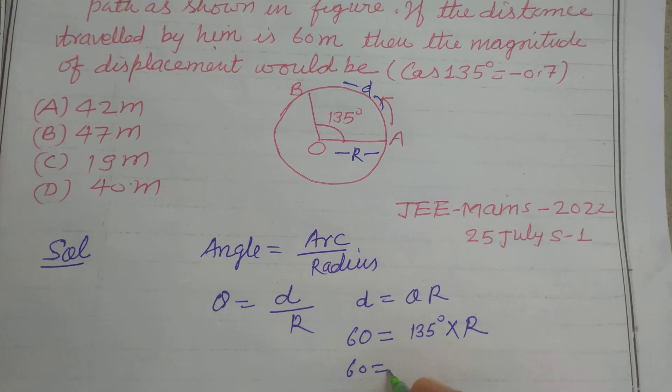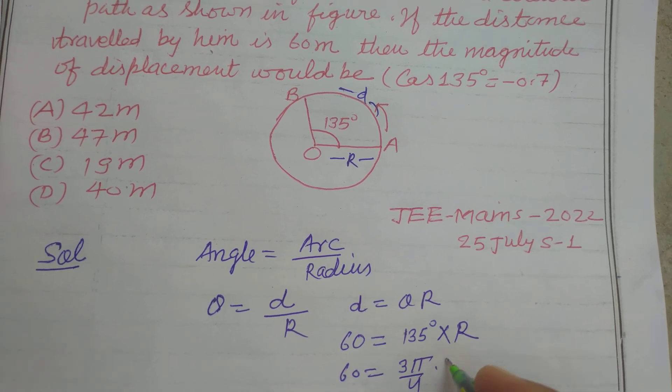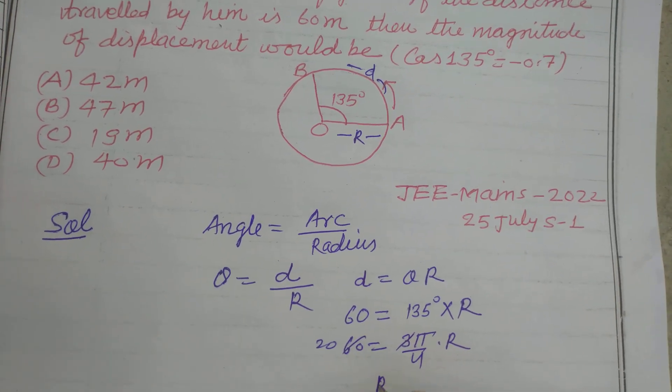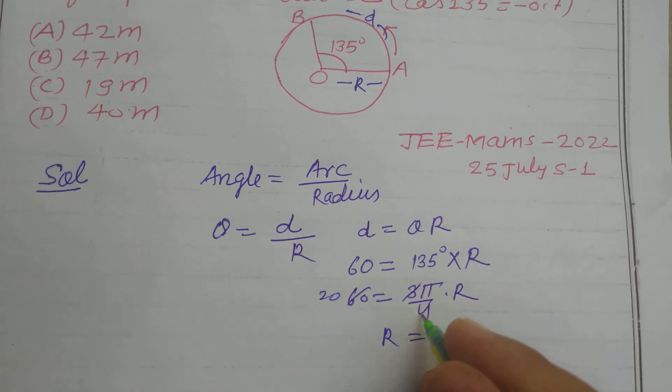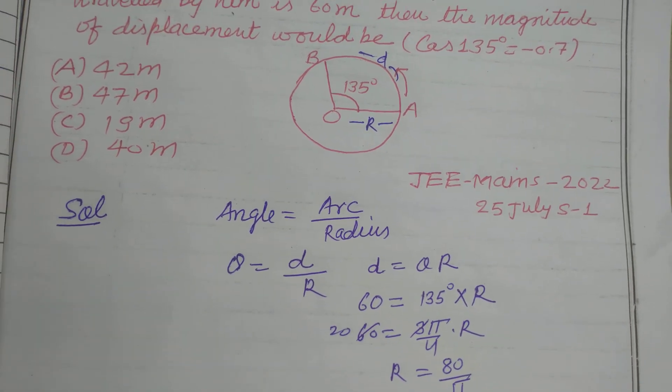So 60 equals 3 pi by 4 into R. This is 20. Therefore, R equals 80 upon pi.